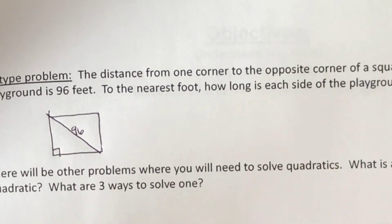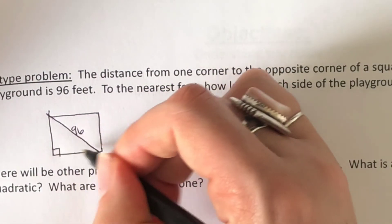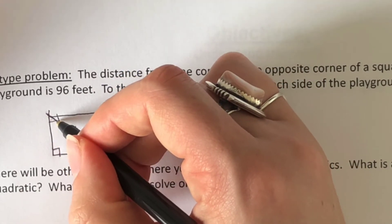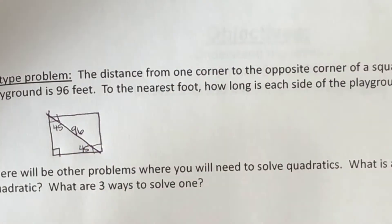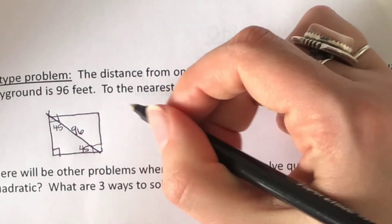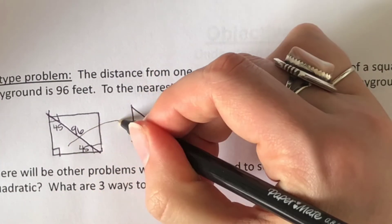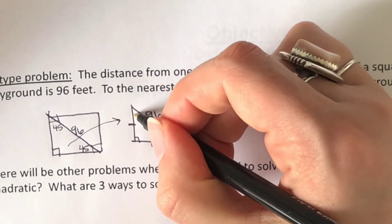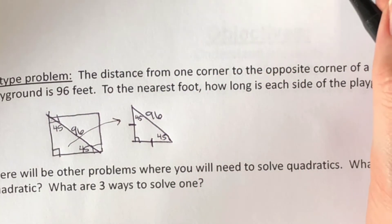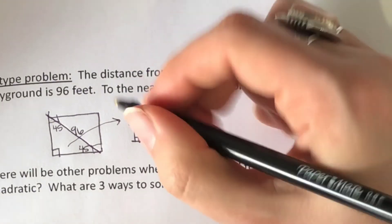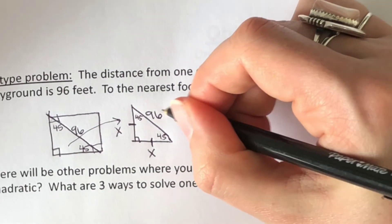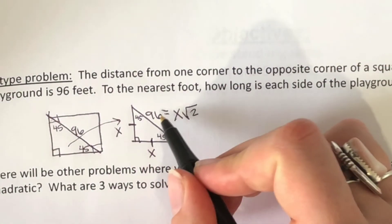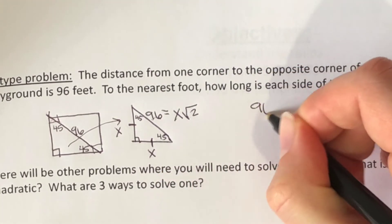We have a square playground. Going from corner to corner gives us 96 feet, and that's obviously the hypotenuse of a right triangle. Because the corner of the square is a 90-degree angle, when we cut it in half we get 45 and 45 — so we just made a 45-45-90 triangle. The two legs have to be the same size since it's a square. Label the sides: the legs are X and X, and the hypotenuse formula is X times the square root of 2.